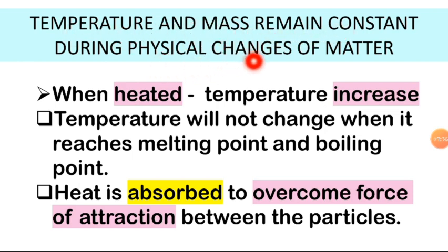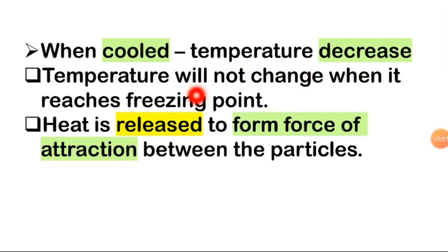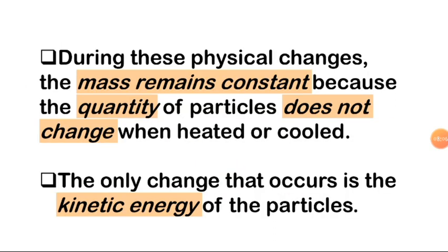Temperature and mass remain constant during physical changes of matter. When heated, temperature increases but will not change when it reaches the melting point or boiling point — heat is absorbed to overcome the force of attraction between particles. When cooled, temperature decreases but stays constant at the freezing point as heat is released. Mass remains constant because the quantity of particles does not change; only the kinetic energy of the particles changes.